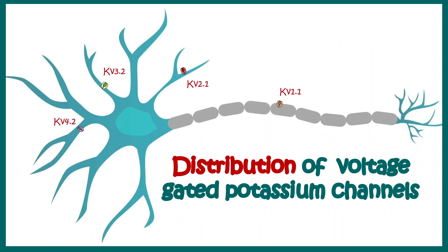An important point is that the distribution of KV channels is heterogeneous across different neurons. KV1.1 is found throughout the axon, KV2.1 in the proximal dendrite, KV4.2 in the distal dendrite, and KV3.2 all over the dendrites. This differential distribution of voltage-gated potassium channels implies important roles in overall neuronal functionality and signal integration.